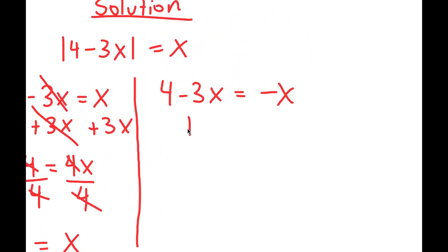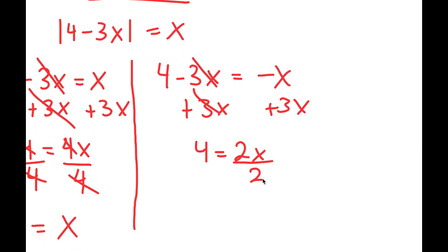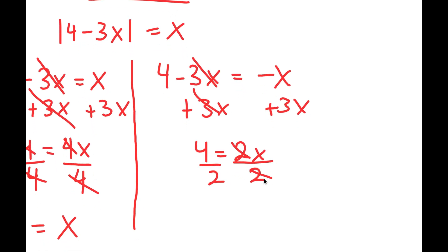And now we also have to solve this equation. So I can add 3x on both sides and I get 4 equals 2x. Now if I divide both sides by 2, I get x equals 4 divided by 2, which is 2.